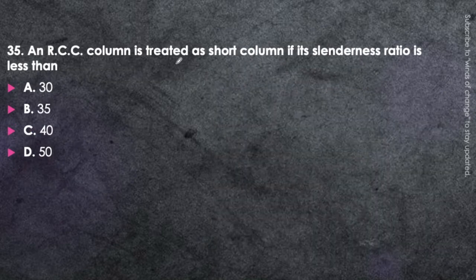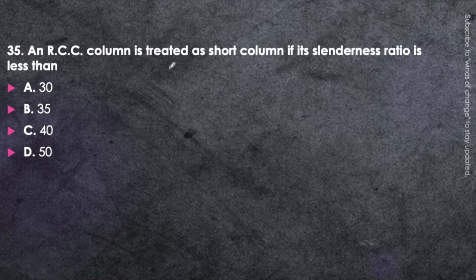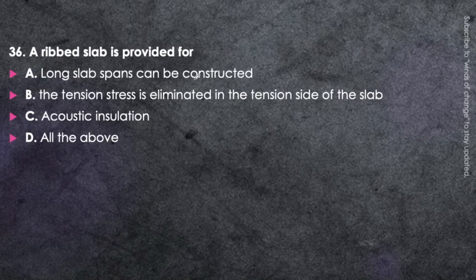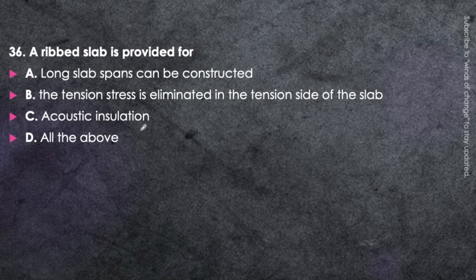Next question: An RCC column is treated as a short column if the slenderness ratio is less than 50 — option D. Beyond 50, it is called a long column. Next question: A ribbed slab is provided for long slab spans, tensile stress is eliminated on the tension side of the slab, and it provides acoustic insulation — so the answer is all of the above.